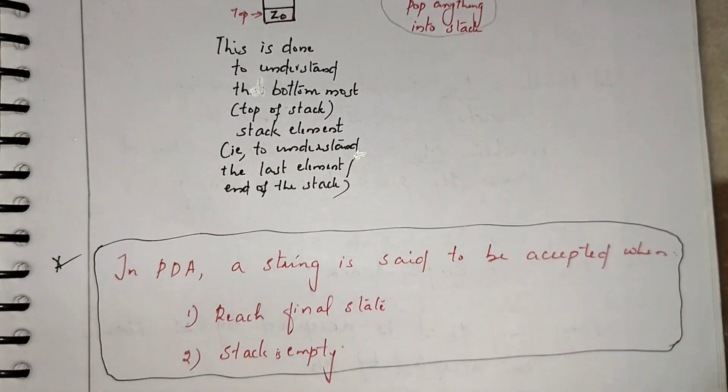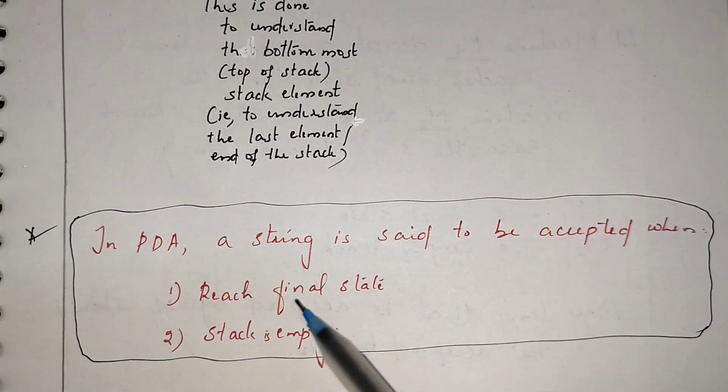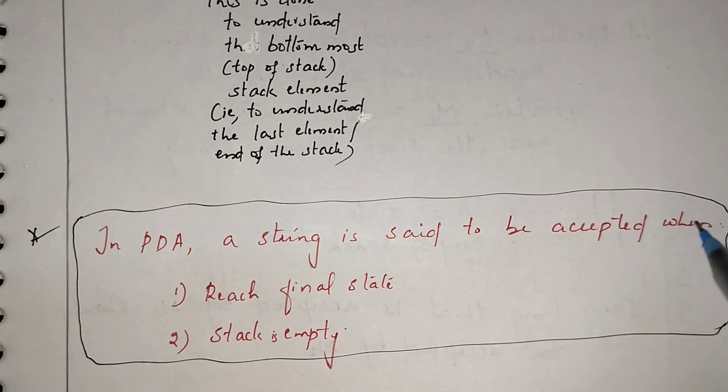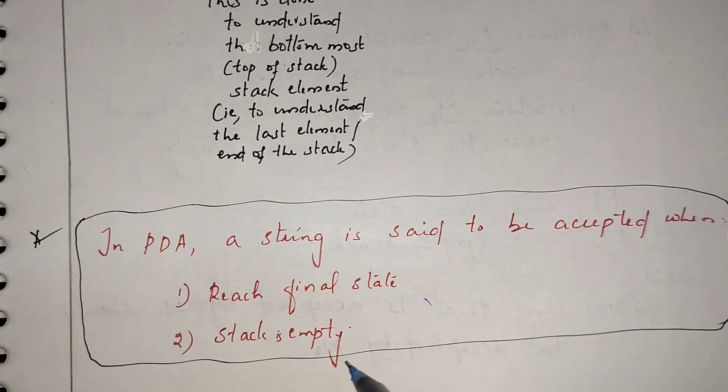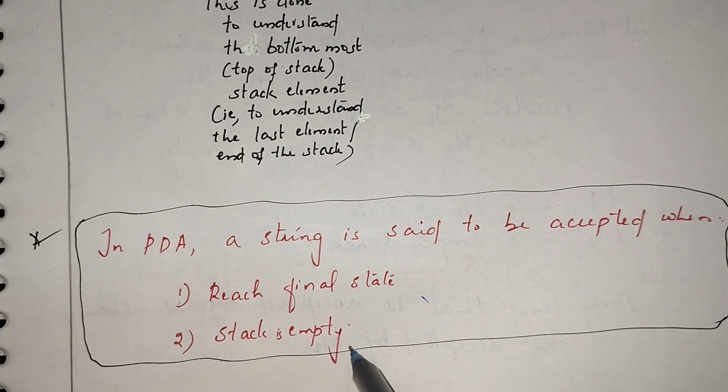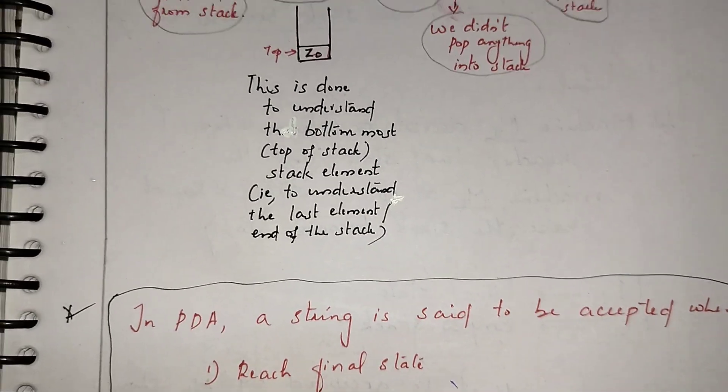In a pushdown automata, a string is said to be accepted when it reaches the final state or when the stack is empty.